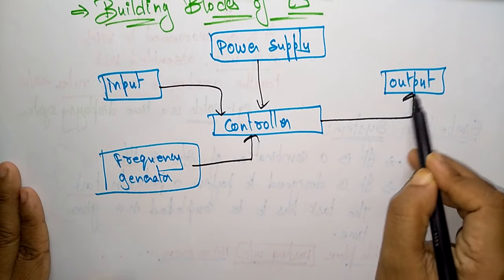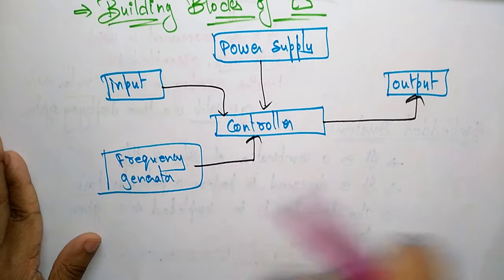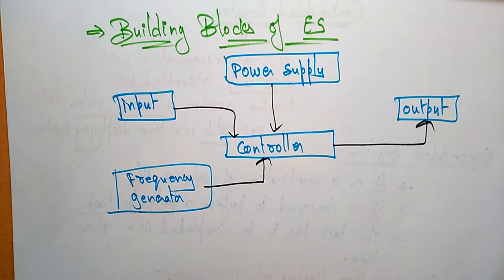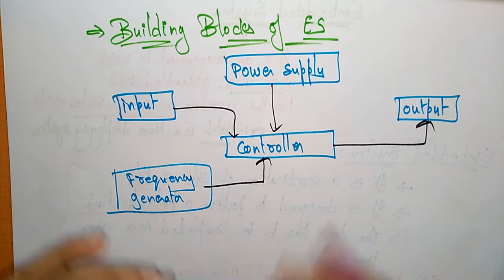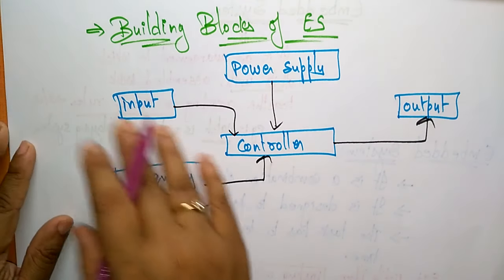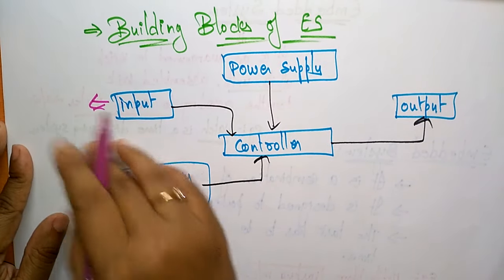So the building blocks are: power supply, controller, and output. Now let's look at the different inputs. For whatever device you are considering, think about what the inputs are, what the outputs are, whether power supply is given, what type of controller is being used, and whether a frequency generator is present. The different inputs for an embedded system start with sensors.